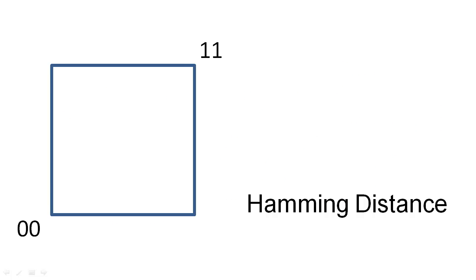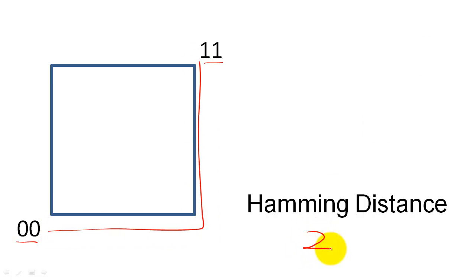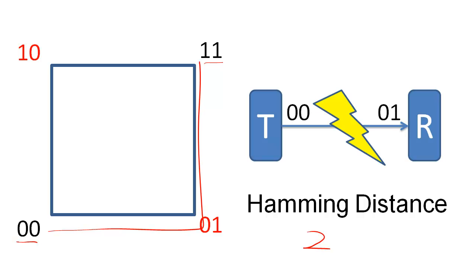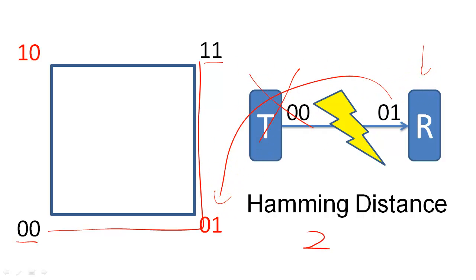Let's change our code so that it still has two code words, but now each code word consists of two bits. We would still have two valid code words, but the Hamming distance for this code would be 2, because each code word differs by two bits. There are two potential bit encodings that would be invalid. If an error with one bit occurs, the receiving component would know that an error occurred because the received message does not match valid information. However, the receiving component could not correct the error, because the error has an equal Hamming distance from both valid code words.